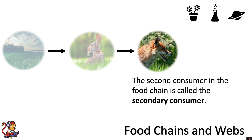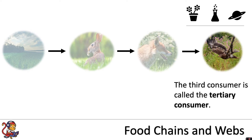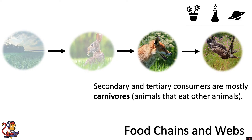The second consumer in the food chain is called the secondary consumer, and the third consumer is called the tertiary consumer. The secondary and tertiary consumers are mostly carnivores — animals that eat other animals. Again, they could be omnivores, but often they are carnivores.